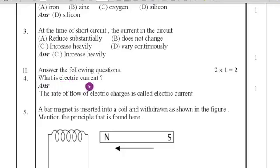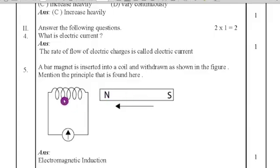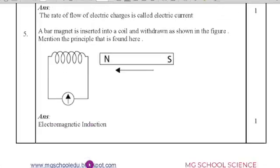Fourth question: what is electric current? The rate of flow of electric charges is called electric current. Fifth question: a bar magnet is inserted into a coil and withdrawn as shown in the figure. Mention the principle demonstrated here. When the magnetic bar passes through the coil, it produces EMF — that means electromagnetic induction. So the answer is electromagnetic induction.